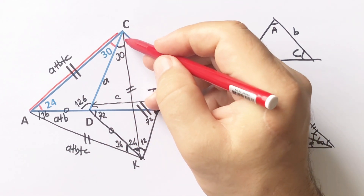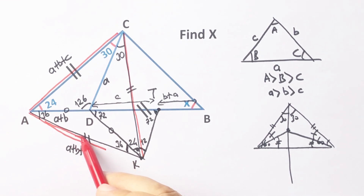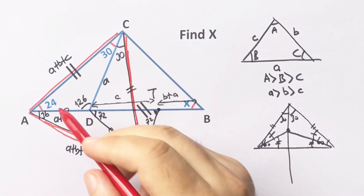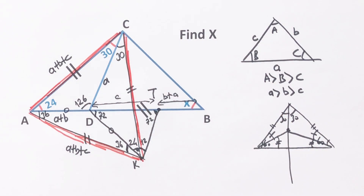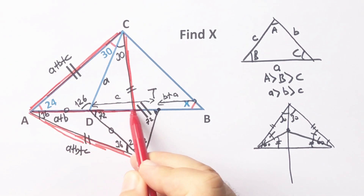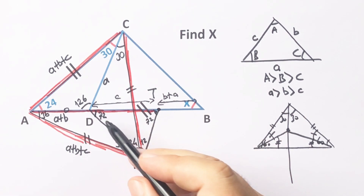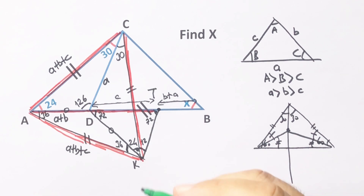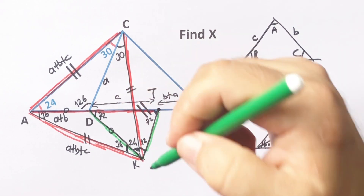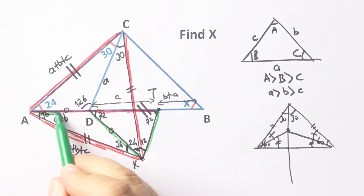Now let's draw the equal sides with a red pen. These are equal sides. And one more — this length is also a plus b plus c. If you notice, these green sides are equal. That means if here is a plus b, then this length is also a plus b.